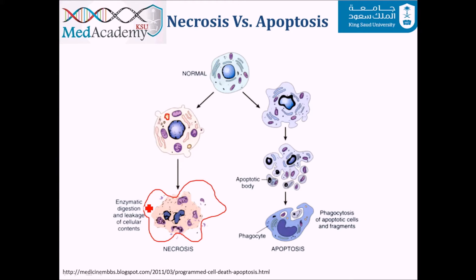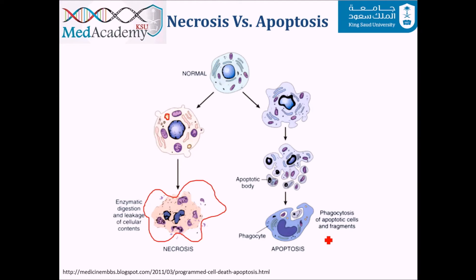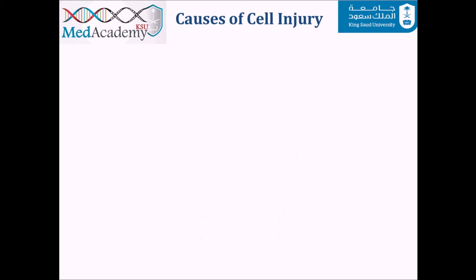Types of injuries that lead to necrosis include ischemia, exposure to toxins, various infections, and trauma. Necrosis is always pathological. There is another, physiological way of dying called apoptosis, also known as programmed cell death. It starts with nuclear dissolution, followed by cellular fragmentation and release of apoptotic bodies. The cell membrane remains partially intact, there is no inflammation, and the process ends with phagocytosis — making it a very clean process. Causes of apoptosis include deprivation of cofactors or irreparable DNA damage, where the cell triggers its own death.